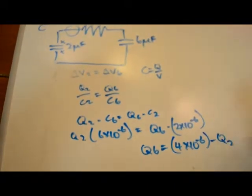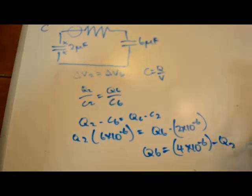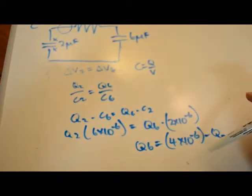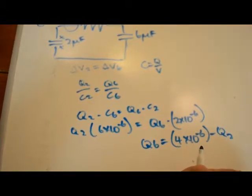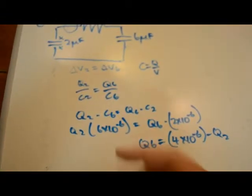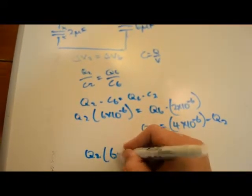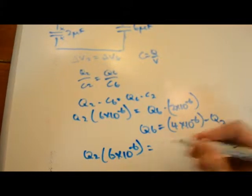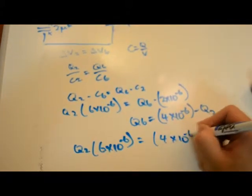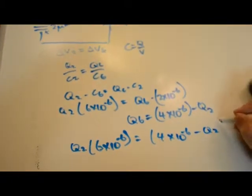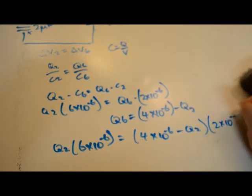We can say Q6 equals 4 times 10 to the negative 6 minus Q2, because Q2 and Q6 add up to equal 4 times 10 to the negative 6. Now we can plug in everything to solve for Q2 and Q6. So Q2 times 6 times 10 to the negative 6 equals 4 times 10 to the negative 6 minus Q2 times 2 times 10 to the negative 6.